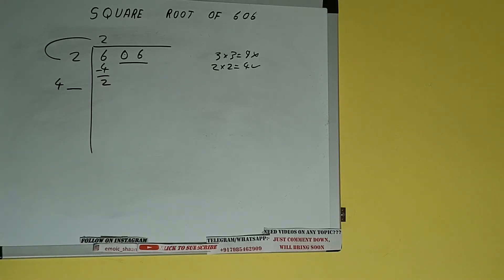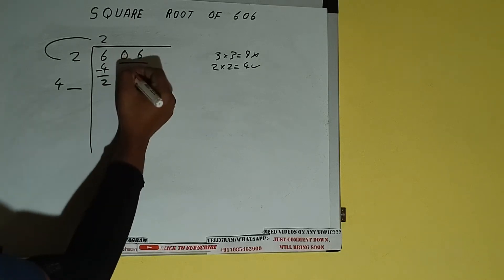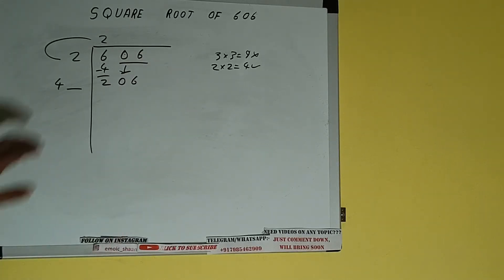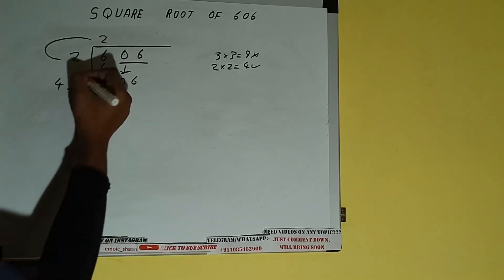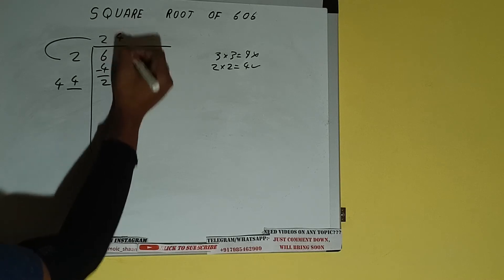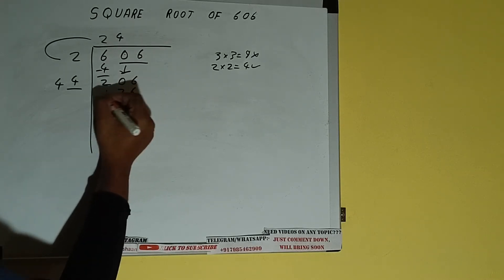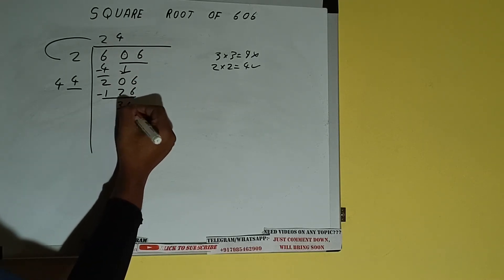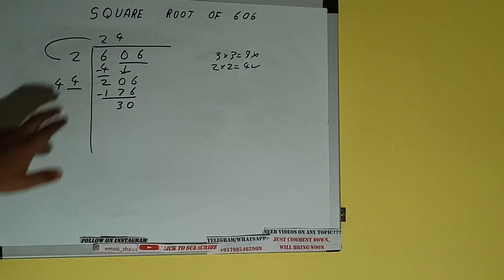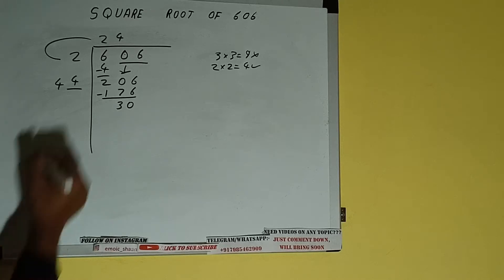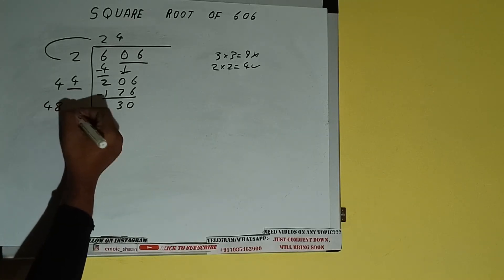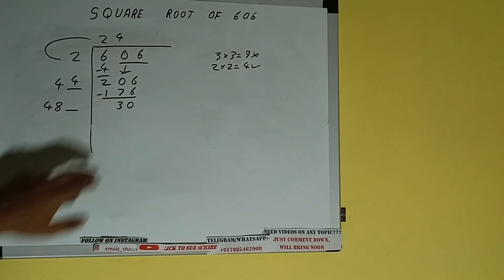This number we need to make it big, so bring the next pair down and it will be 206. Now whatever number we write here, we have to write here also. So if we write 4 here and 4 here, it will be 176. Subtract, 30 will be left. Now 44 into 4 we did, so add 4. So 44 plus 4 will be 48, and keep a digit extra.